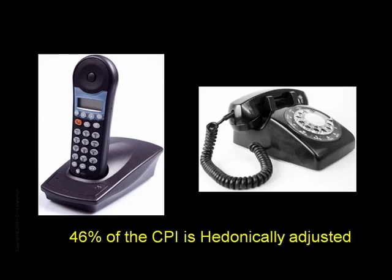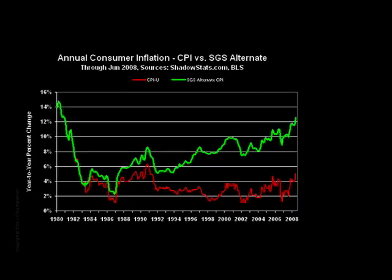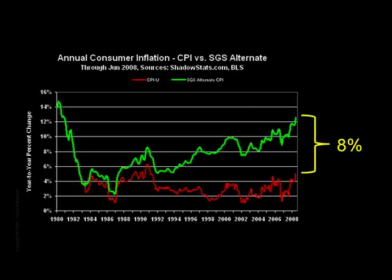If inflation were calculated today the exact same way it was in the early 1980s, Mr. Williams finds that it would be running closer to 13% than the currently reported 5%. This is a stunning 8% difference, which explains much that we see around us.